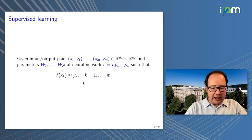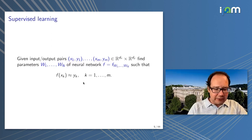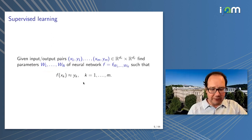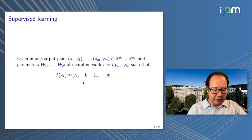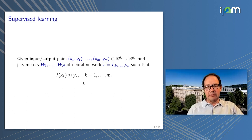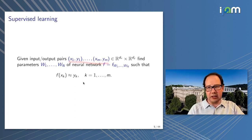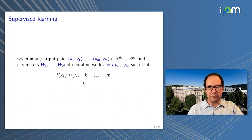In supervised learning, we have given input-output pairs and we would like to find the parameters — the matrices of the neural network — such that we fit the labels of the input data. We want to find a function which maps the input to the output, and of course this should not only work for the training data but hopefully also generalize to unseen data, where we just get the input and would like to predict the output.